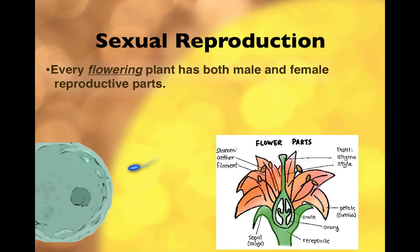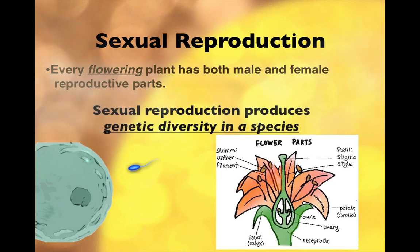When a plant reproduces, it makes a fruit, and inside that fruit is the seed. Where that ovule is in the diagram, that's where the seeds form, and that little bulb becomes the fruit. This particular flower doesn't make a tasty fruit, but an apple blossom would be worth a bite. The important thing about sexual reproduction is that it produces genetic diversity in a species, which allows species to change over long periods of time — another topic for future presentations.